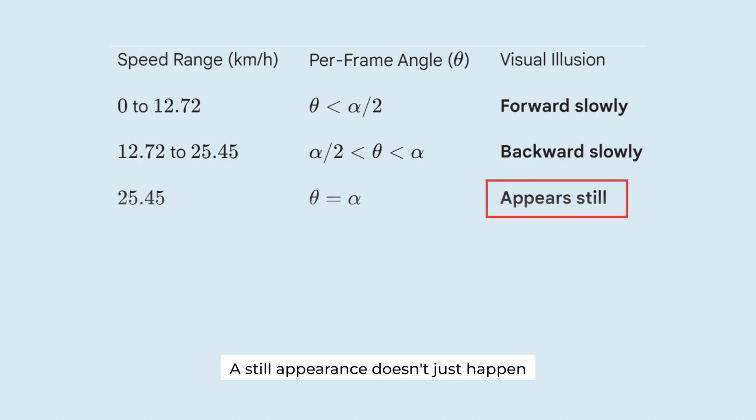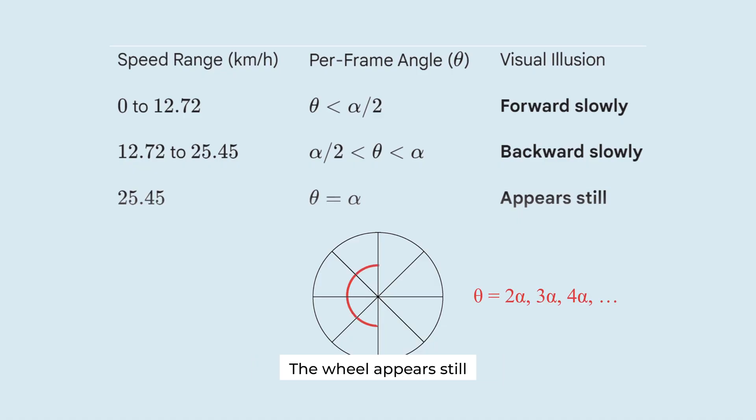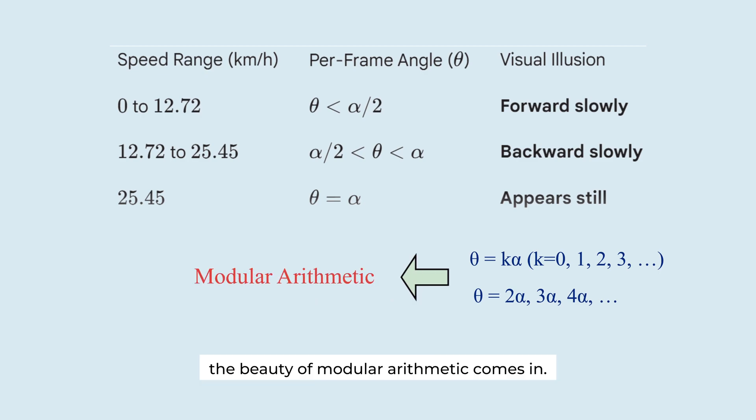A still appearance doesn't just happen when the wheel rotates alpha per frame. It also happens when it rotates by 2 alpha, 3 alpha, 4 alpha. The wheel appears still whenever the angle of rotation per frame is an integer multiple of the angle between spokes. This is where the beauty of modular arithmetic comes in.